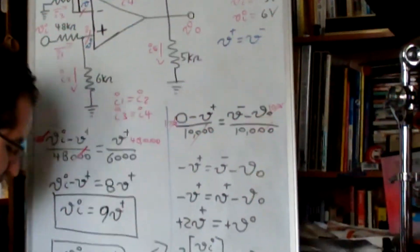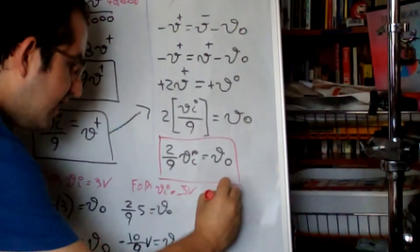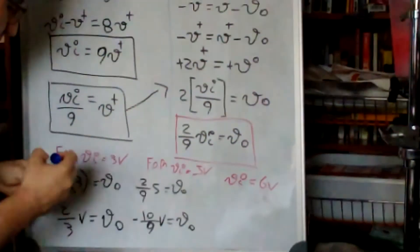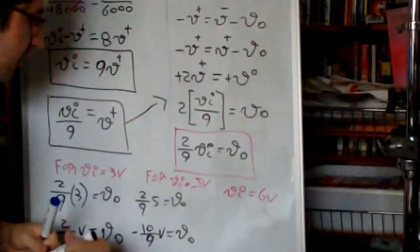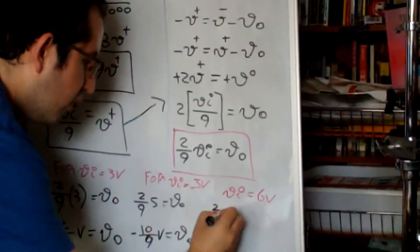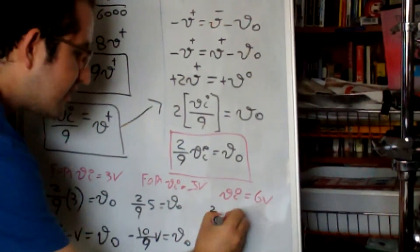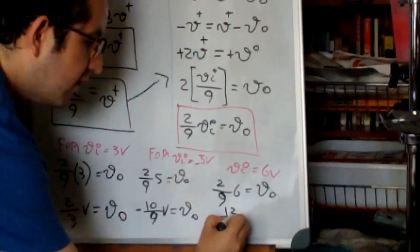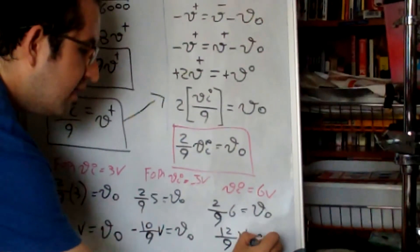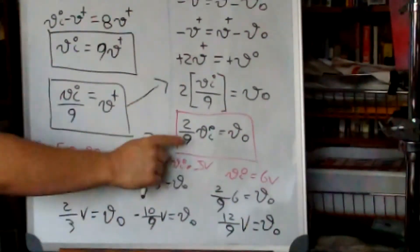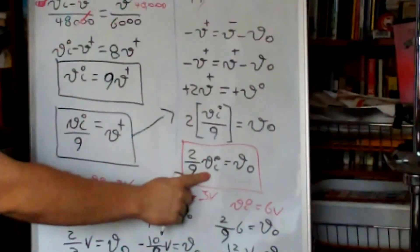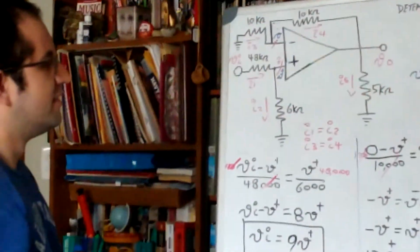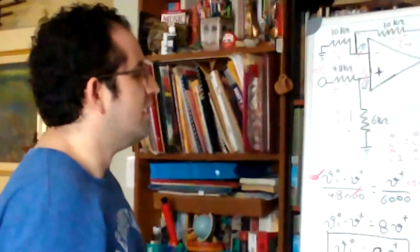Finally, for V input equal to 6 volts, we have (2/9) times 6 equals V out, which gives 12/9 volts. You can plug in any input value into this equation and know the output. I hope this is helpful — see you in the next video.